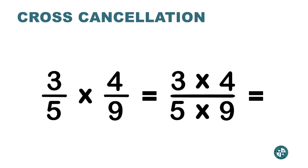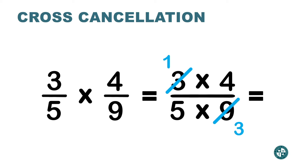Now do not multiply yet. The idea is to simplify before we multiply. Pick two numbers — one on the top and one on the bottom — and think if there's any number that can divide both of them. For example, 3 and 9 can both be divided by 3. So 3 divided by 3 gives 1 — cross out the 3. And 9 divided by 3 is 3 — cross out the 9.